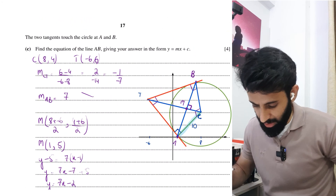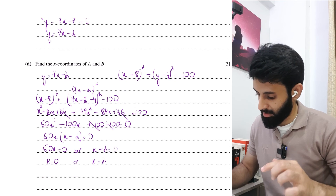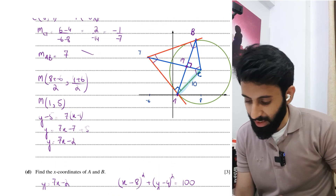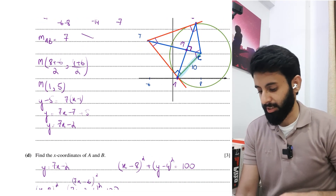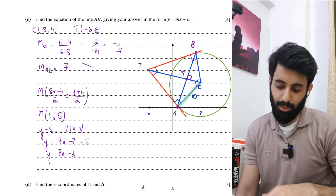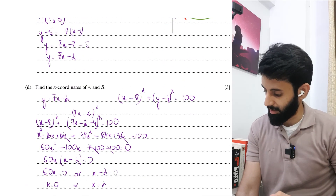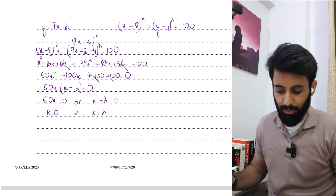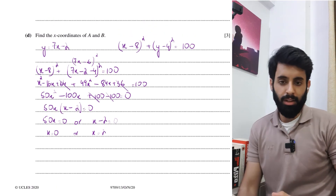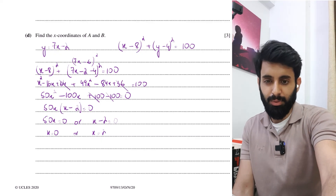So the x-coordinates of A and B are 0 and 2. That brings me to the end of this question and this video. I'd suggest checking out the other questions I've solved, and let me know if there are any specific questions you'd like me to work through. See you in the next one — take care, bye-bye.